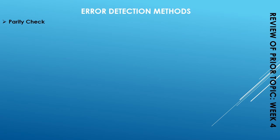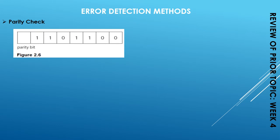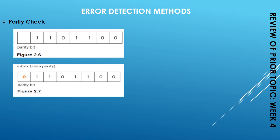Then we talked about the parity check method. Parity checking is one method used to check whether data has been changed or corrupted during transmission from one device or medium to another. Data is transmitted in the form of one byte alongside one parity bit added at the start of that byte. The sender and receiver must agree on whether to use even parity or odd parity. In even parity, if the number of ones in a byte is two, four, six, or eight, the parity bit is set to zero.